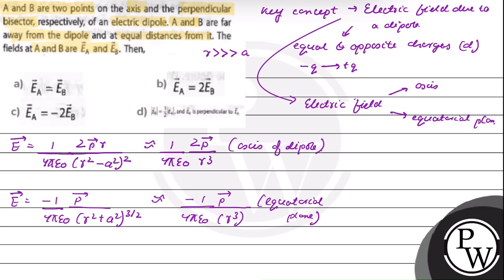The question says A is along the axis, so this will be Ea vector, and this will be Eb vector. On comparing, Ea vector upon Eb vector will be equal to 2, so Ea vector is equal to minus 2 Eb vector.